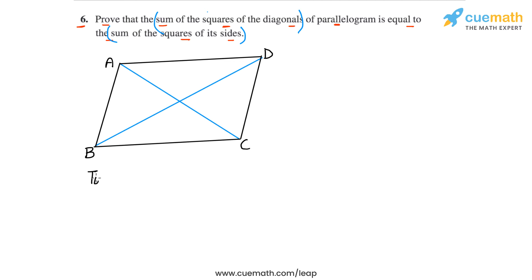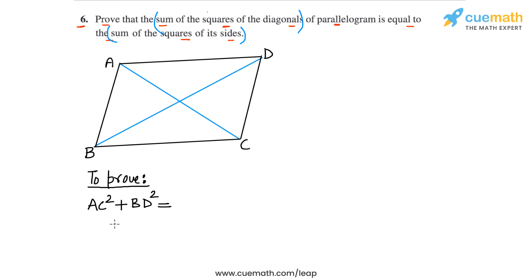What we have to prove is that AC² + BD² = AB² + BC² + CD² + DA². This is what we have to prove.